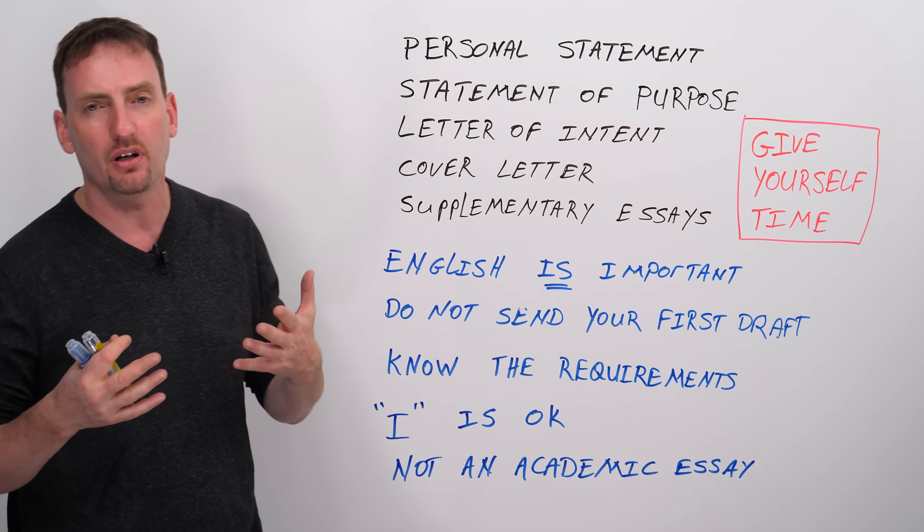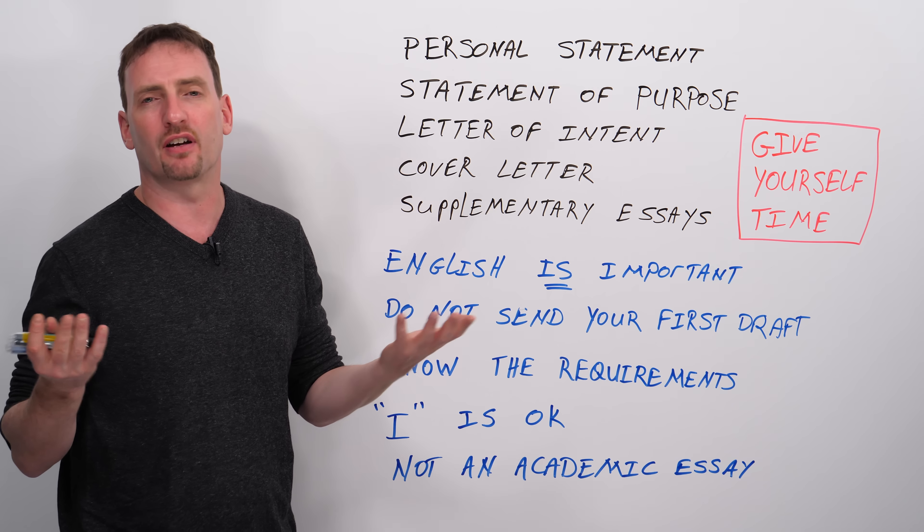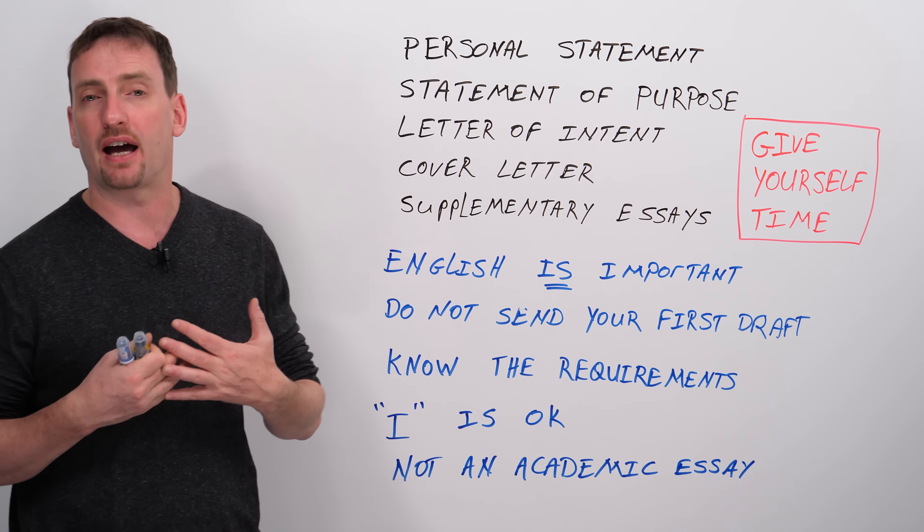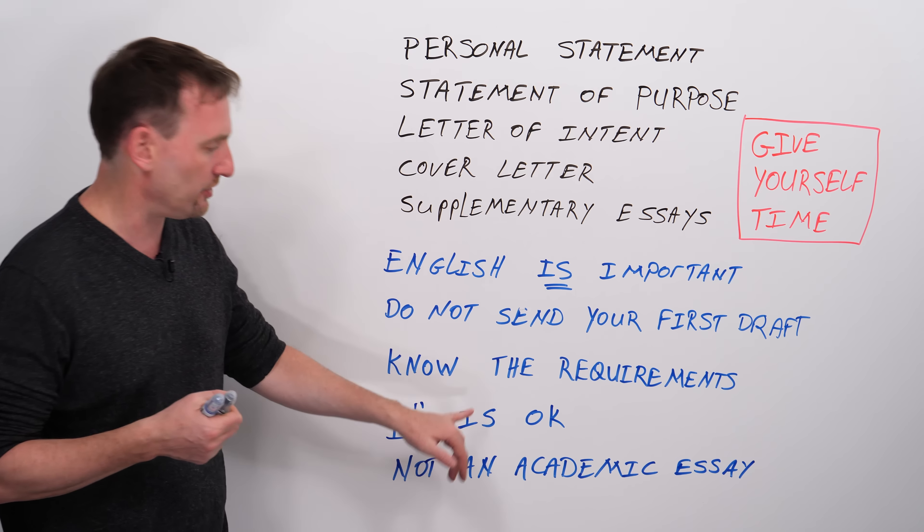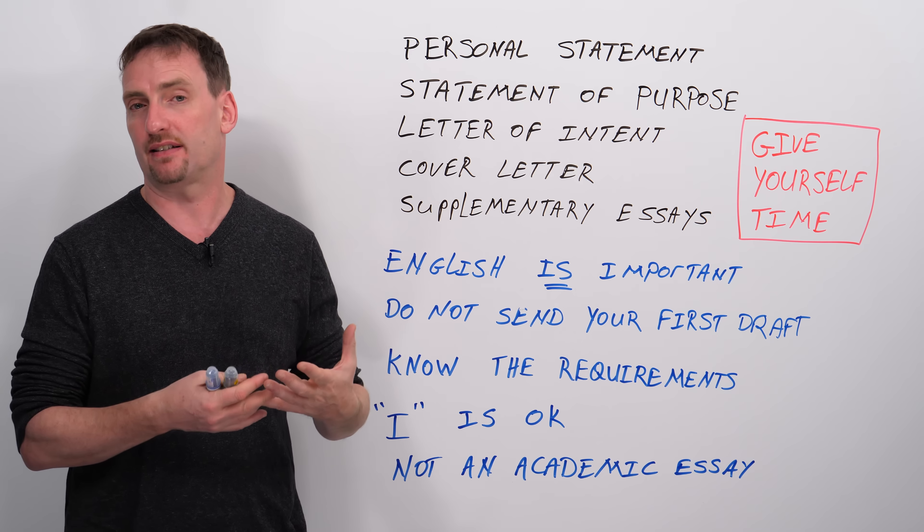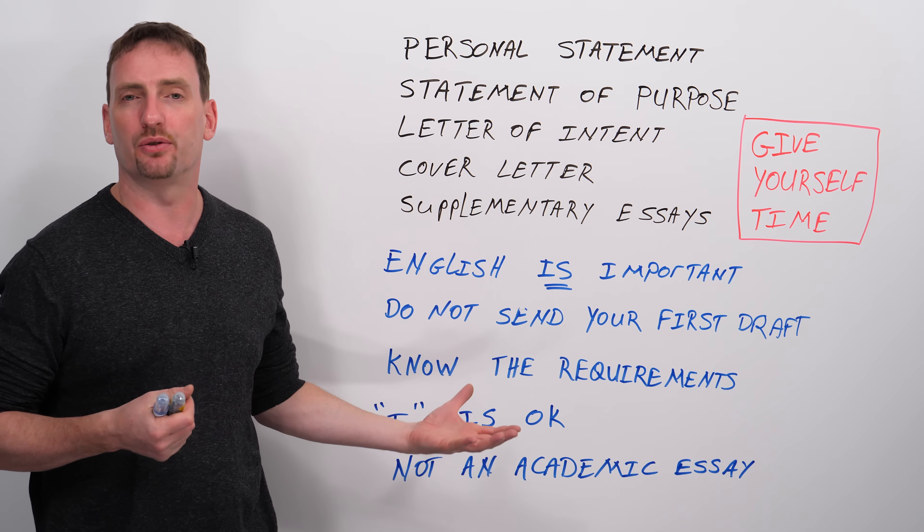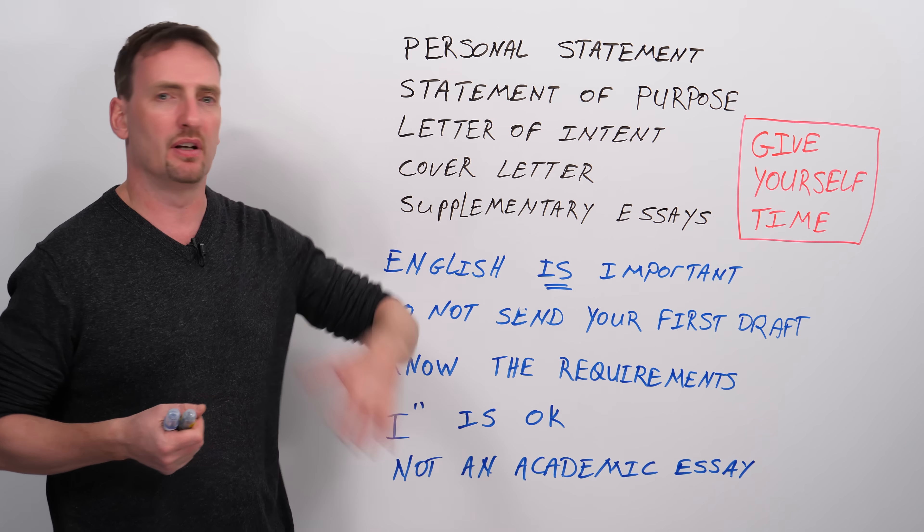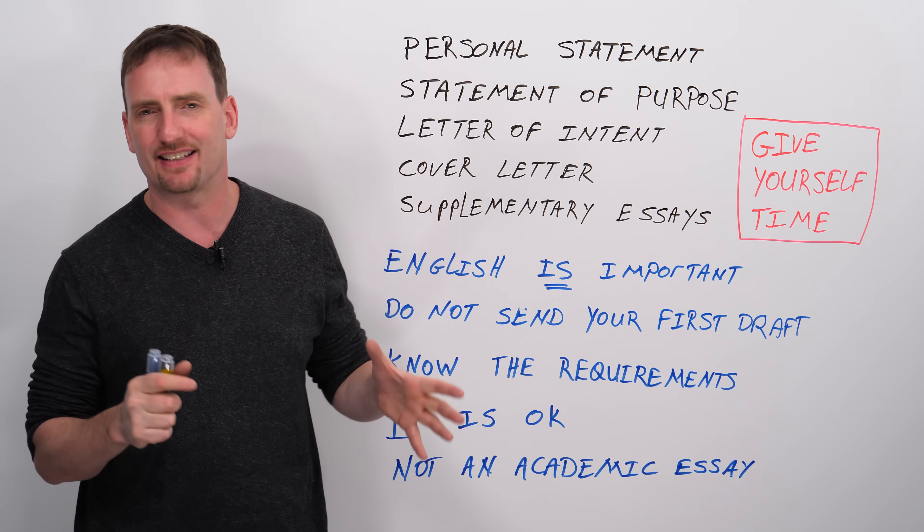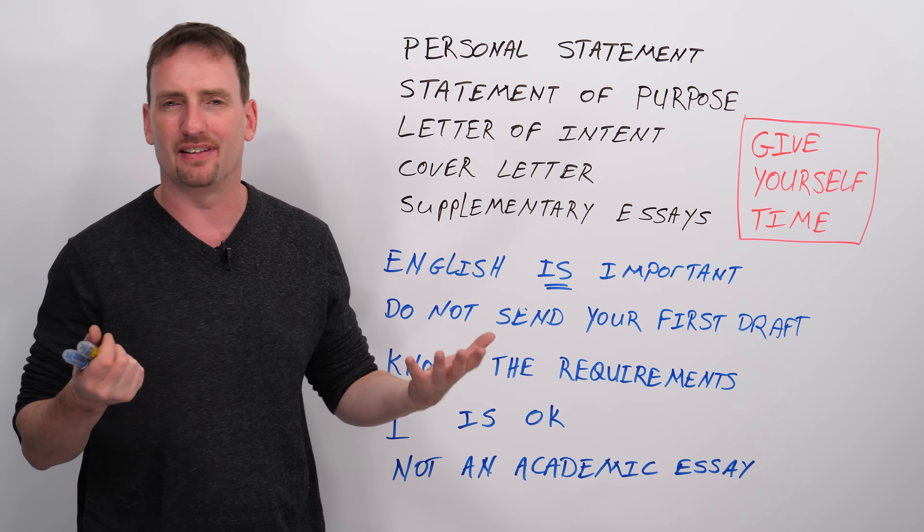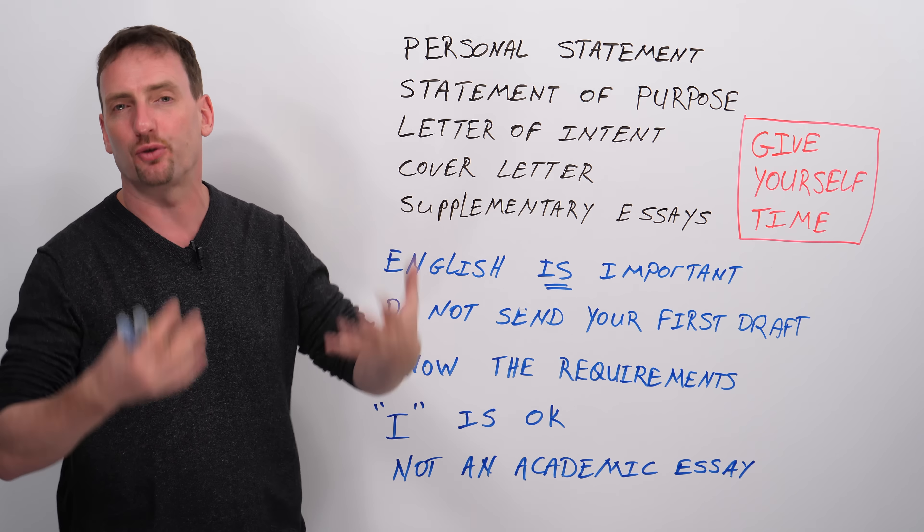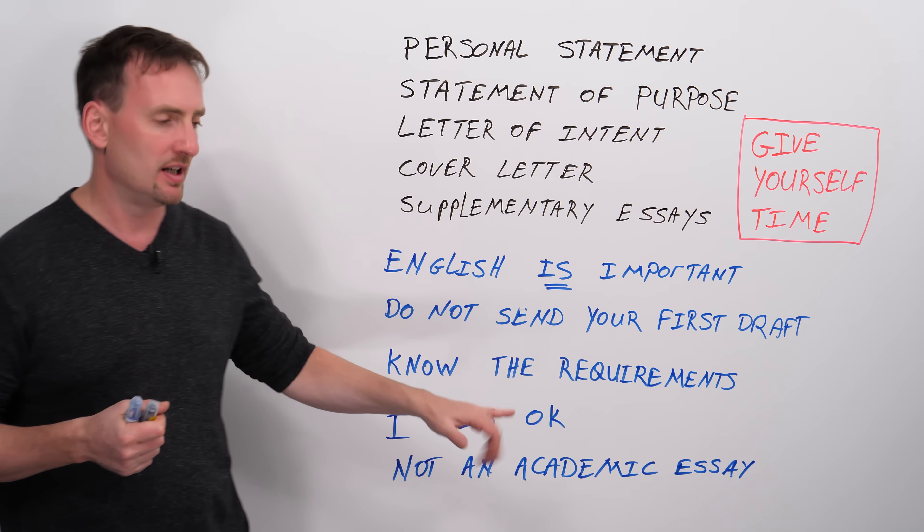Make sure you understand what you need to do. Word count. Character count. Some of the supplementary essays will say in 300 characters or less. Characters means each letter and space and punctuation. It's not 300 words. Make sure you know how much you're allowed to write. If they say 12 font times New Roman, times New Roman font, 12 point size. Make sure you don't write with a bigger font or a different font. Margins. All these things.